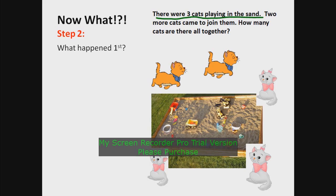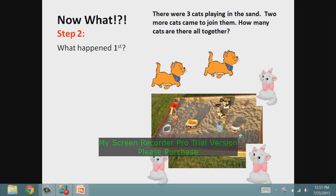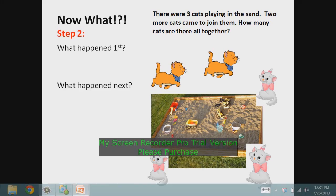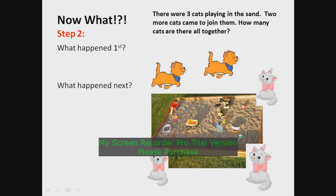So what happened first is usually in the first sentence. There were three cats playing in the sand. Next, what happened next? Which is going to be, you guessed it, your next sentence. Two more cats came to join them.